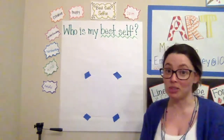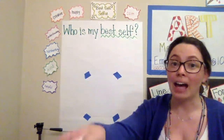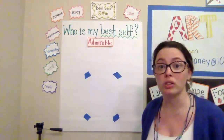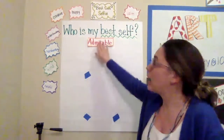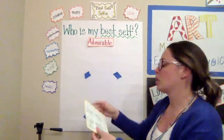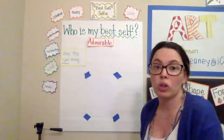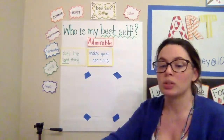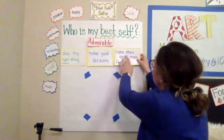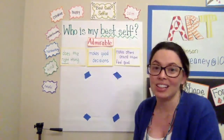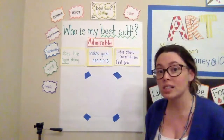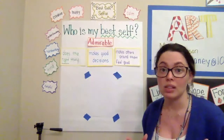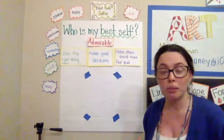The person you're thinking about is definitely admirable. Someone who is admirable does the right thing, makes good decisions, and makes others around them feel good. The cool thing is, when we think about the best version of ourselves, that version can be someone that someone else looks up to, someone that someone else admires. So we can be that admirable person for somebody else.